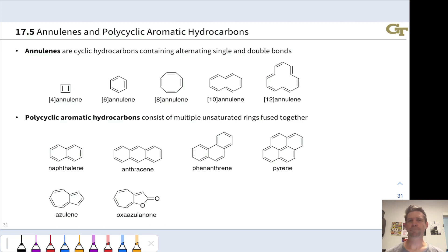So far, we've focused mostly on monocyclic hydrocarbons with one ring that are fully conjugated in the discussion of aromaticity and anti-aromaticity. In this video, we're going to look at other types of aromatic compounds: annulenes, polycyclic aromatic hydrocarbons, and aromatic heterocycles containing a heteroatom within the ring.